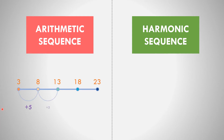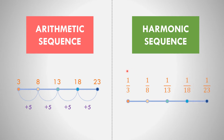Let us get the harmonic sequence. The reciprocal of 3 is 1/3, reciprocal of 8 is 1/8, reciprocal of 13 is 1/13, reciprocal of 18 is 1/18, and reciprocal of 23 is 1/23.